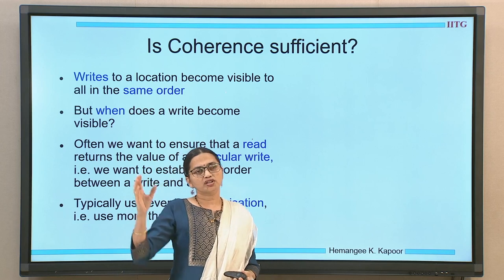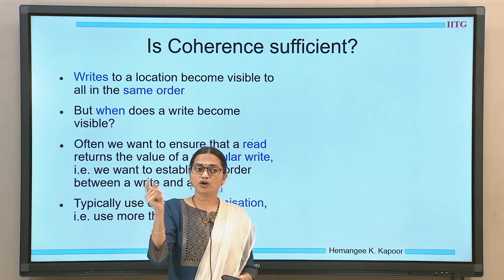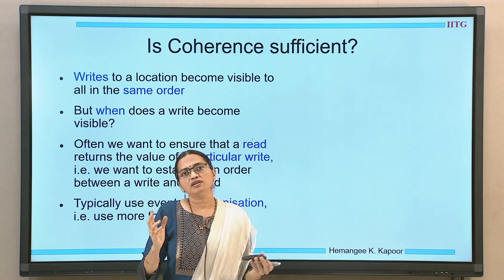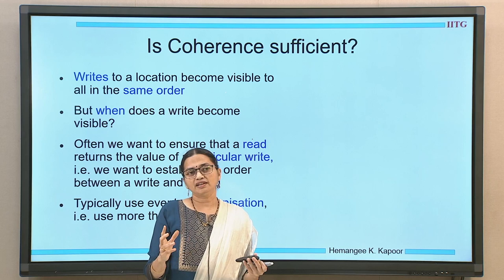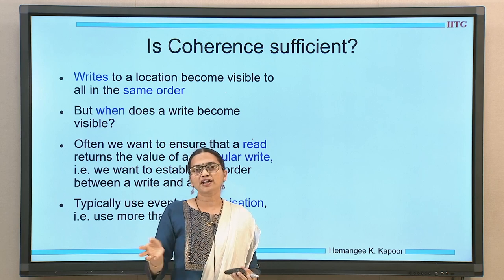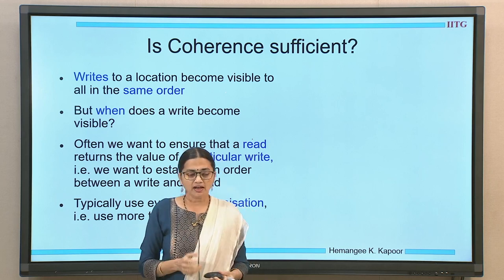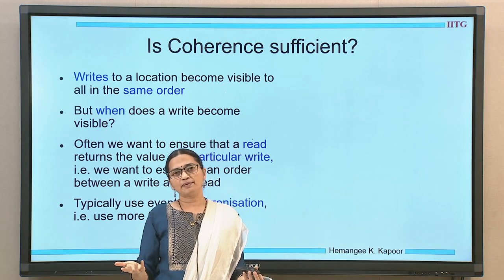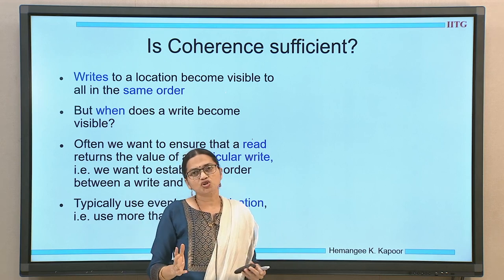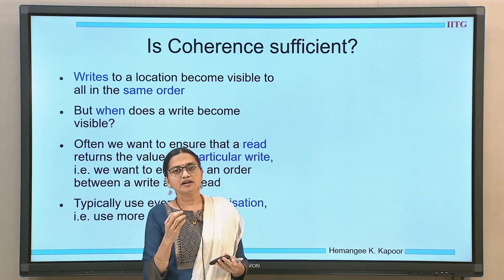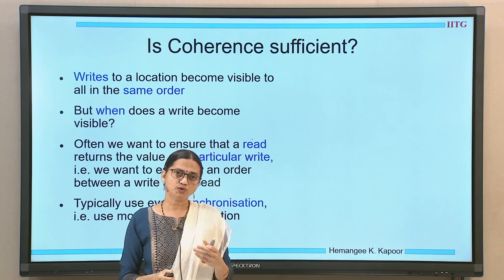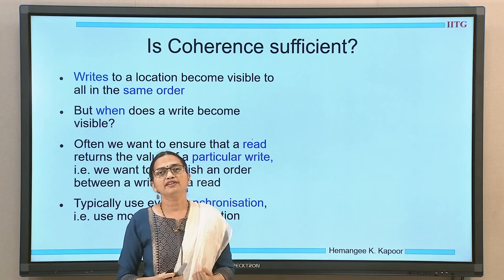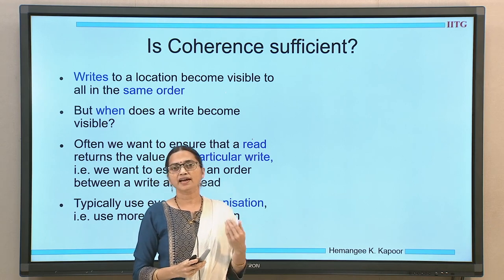Coherence is not sufficient because at times I want my read to return a particular write's value. For example, a process changes the value of a and another process wants that particular value. It does not rely on arbitrary interleaving — we don't say interleave any way and accept any value. Every time you run the set of programs you will get a different interleaving, and this arbitrariness is not desirable in all situations.